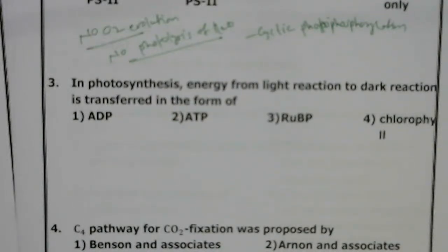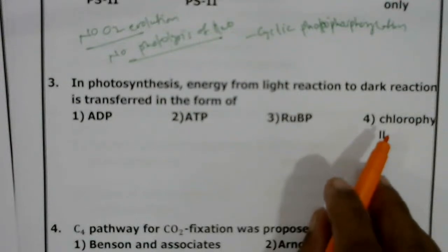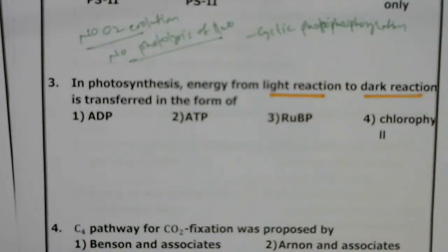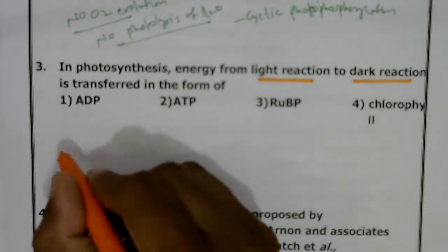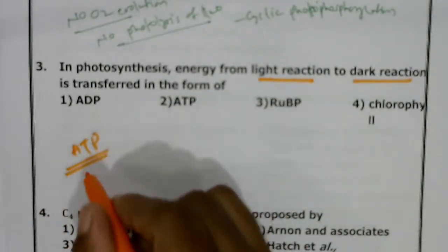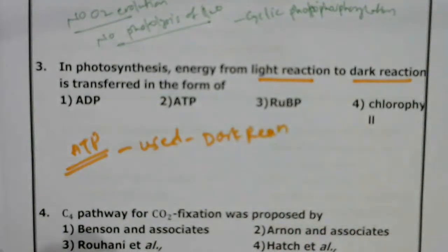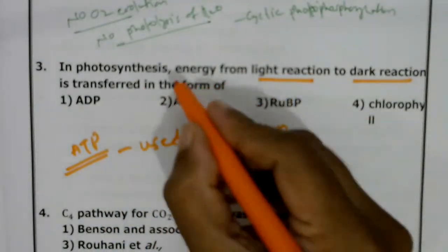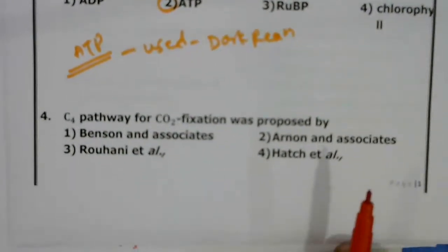Next question: in photosynthesis, energy from light reaction to dark reaction is transferred in the form of ADP, ATP, RUBP, or chlorophyll? Photosynthesis includes two stages: light reaction and dark reaction. During light reaction, light energy is captured and converted into chemical energy in the form of ATP. These ATP molecules are utilized during the dark reaction where carbohydrates are formed after reduction of CO2. So energy is transferred in the form of ATP. Correct answer: second option.